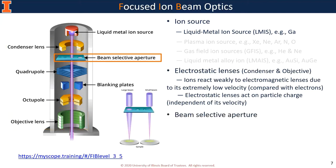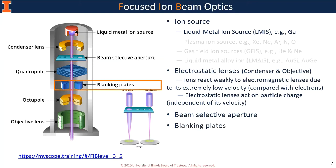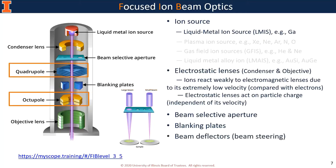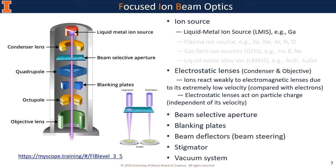In FIB, the ion beam current is set by a beam-selective aperture, which is an aperture strip with different-sized circular holes. The larger the aperture, the larger the ion beam. A blanking plate is used to deflect the beam away from the optical axis when the ion beam is not needed. The rest is just the same as SEM.